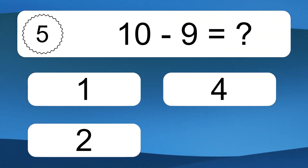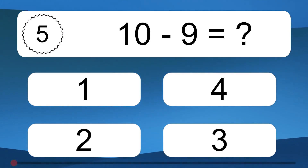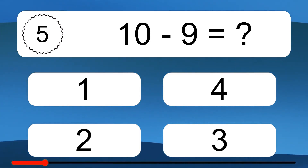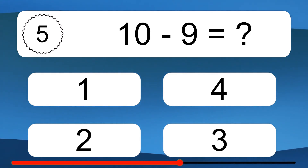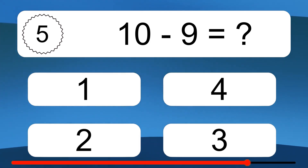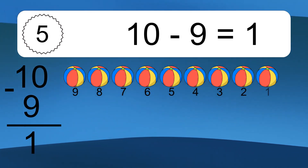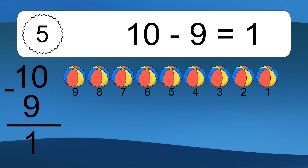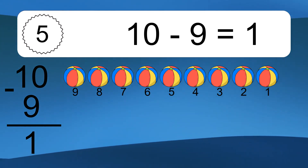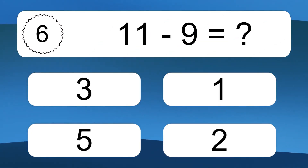10 minus 9 equals what? 10 minus 9 equals 1. Let's count it. 9, 8, 7, 6, 5, 4, 3, 2, 1.